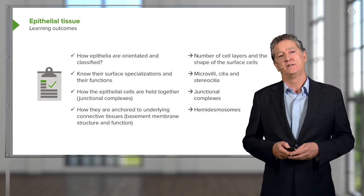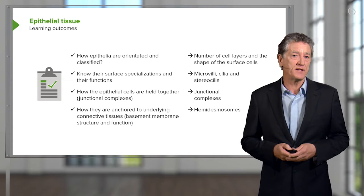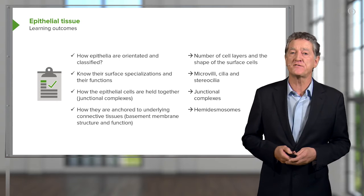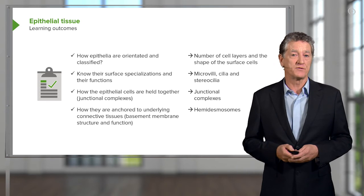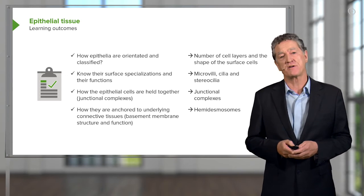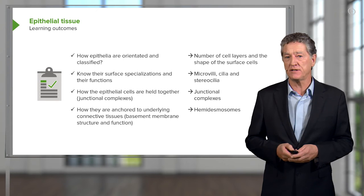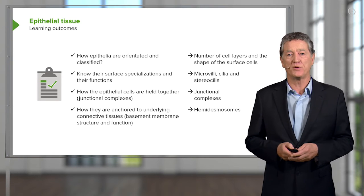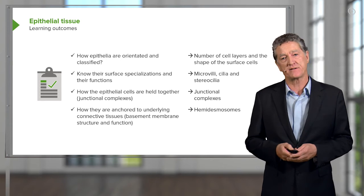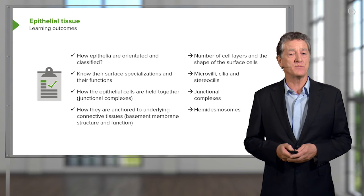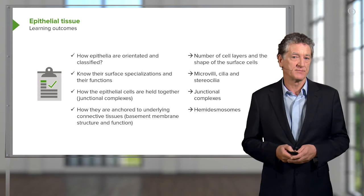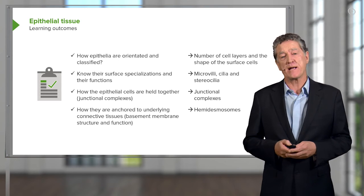In summary, it's important you know how we name epithelia, the certain specialisations on the surface of some epithelial cells, the ways in which cells are held together in epithelia, and the way in which they're anchored by the underlying basement membrane. It's also important to understand that the anchoring of the epithelium into the underlying connective tissue is done by hemidesmosomes, which are similar to macular adherens.